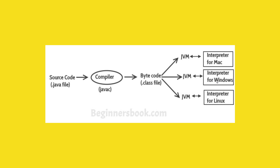Eventually, the bytecode is converted. Back when there was C++ code, there was a lot of operating system dependency. Java changed that by creating the JVM. So whether you're on Mac, Windows, or Linux, all JVMs read the same bytecode. Java has a tagline: Write once, run everywhere. The same code runs on any platform.